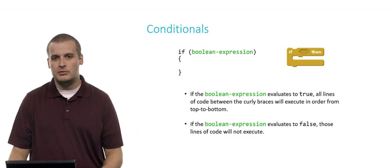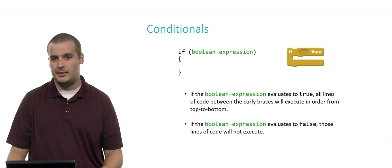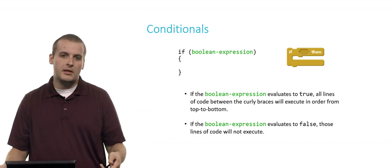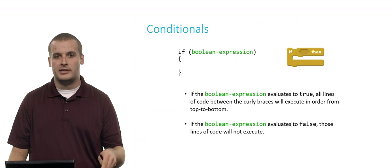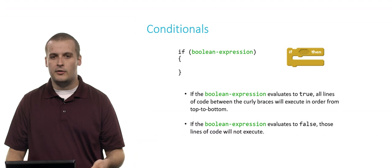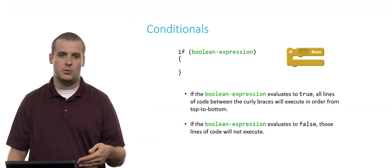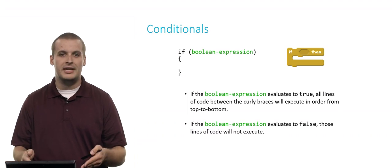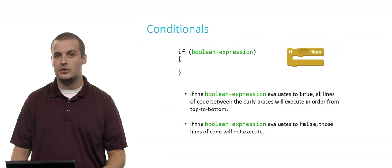If the Boolean expression in the if statement is true, then all of the lines of code between the curly braces will execute in order from top to bottom. If the Boolean expression is false, we'll skip over everything in between the curly braces because we only want to go down that fork in the road if the Boolean expression is true.